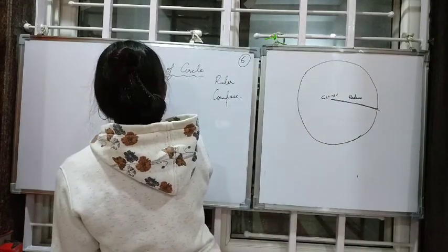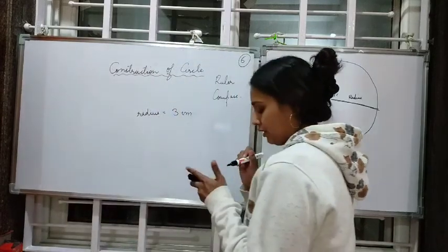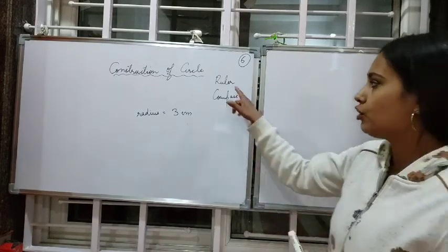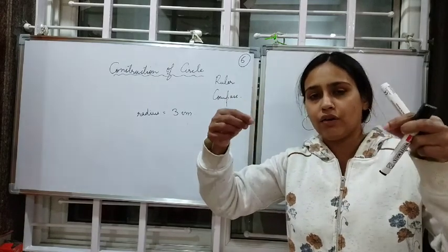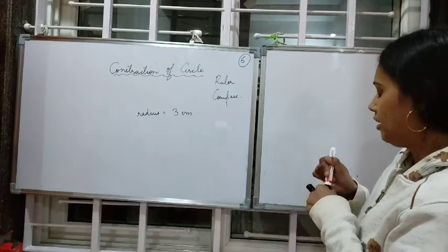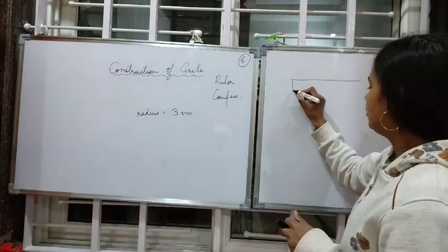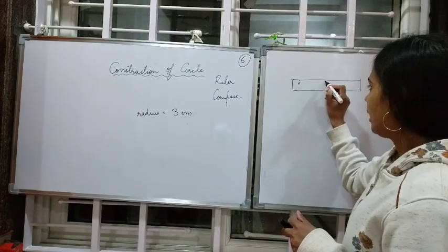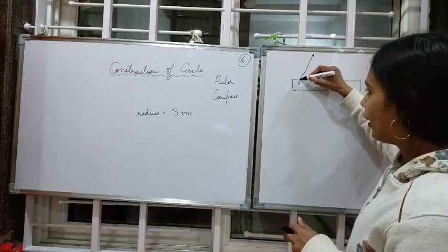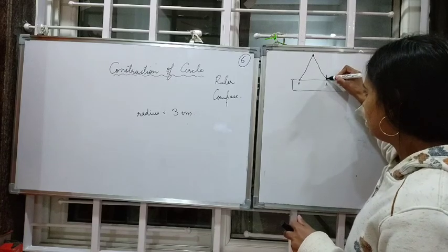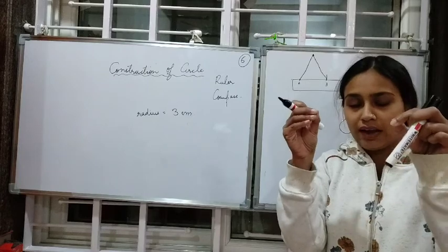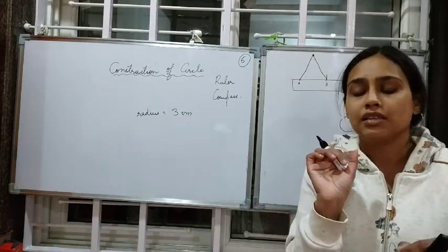Suppose we have to draw a circle of radius three centimeters. First, take your ruler and mark the length of three centimeters with the help of your compass. Place one pointer of the compass at zero on the ruler and the pencil's pointer at three centimeters. Now you have fixed your compass to a radius of three centimeters.